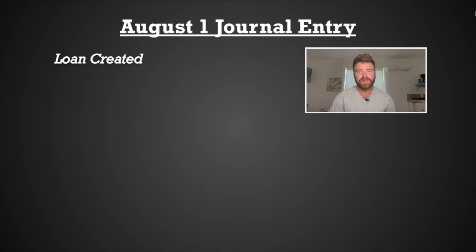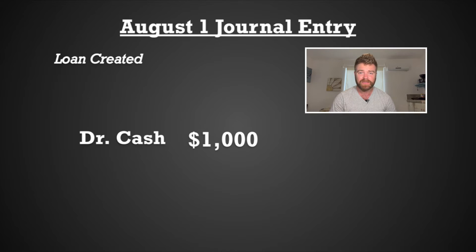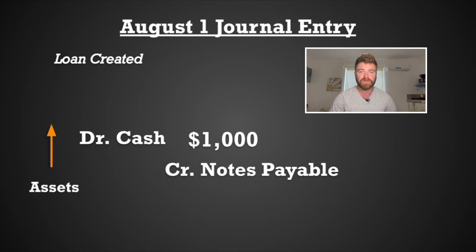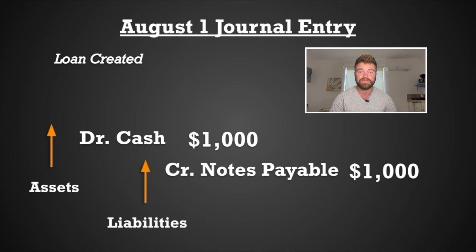Now let's jump into a journal entry to see exactly how your friend would record this loan. On August 1st, he would debit cash for $1,000 to show the amount collected from the loan, and assets will increase for him. Then he would credit notes payable for $1,000, showing that he owes you $1,000 at a later date, and liabilities here would increase. As far as interest goes, nothing yet because no time has passed.